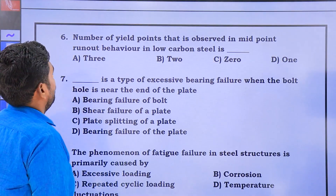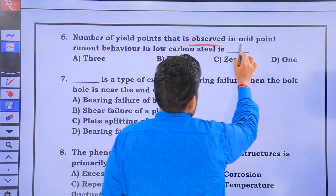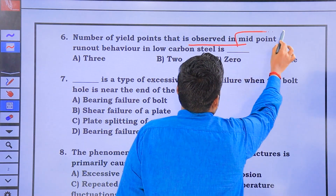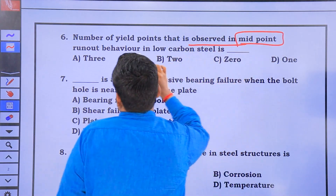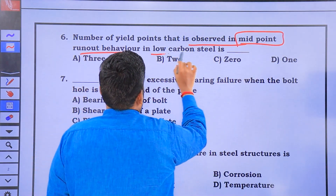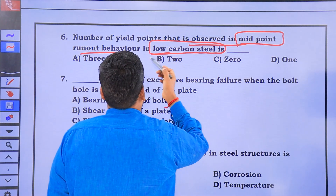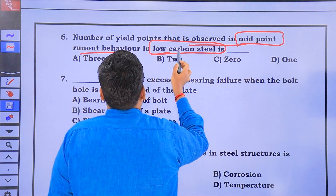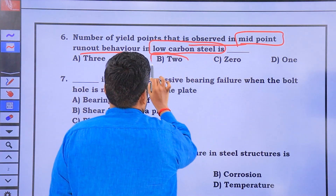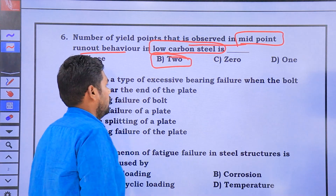The number of yield points observed in the midpoint run-out behavior of low carbon steel is 2.